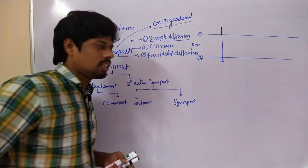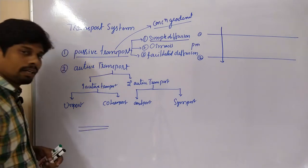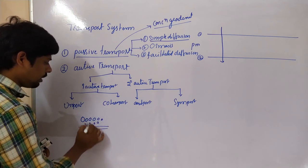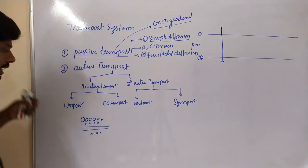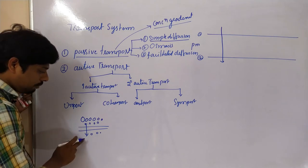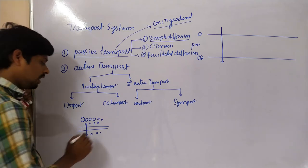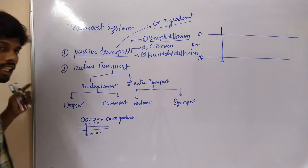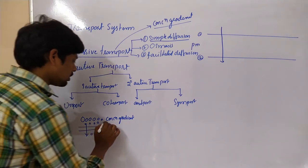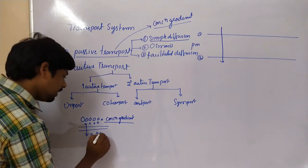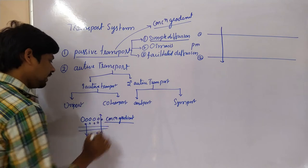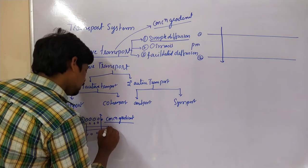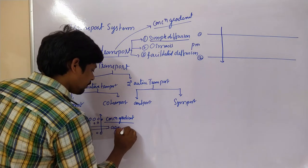What is the concentration gradient? Here is a plasma membrane that contains two sides. One side contains more solutes compared to the other side. When molecules move from the higher solute side to the lower solute side, such type of transport is called movement according to the concentration gradient. If solutes move from lower to higher concentration, that is called transport against the concentration gradient.